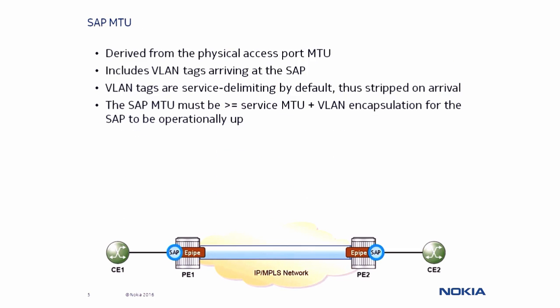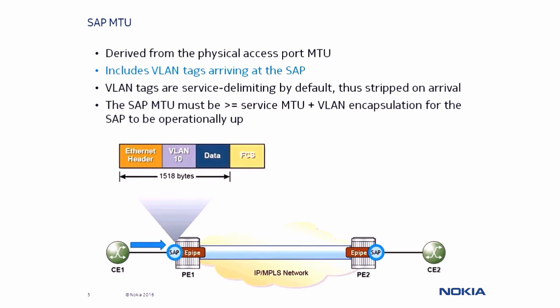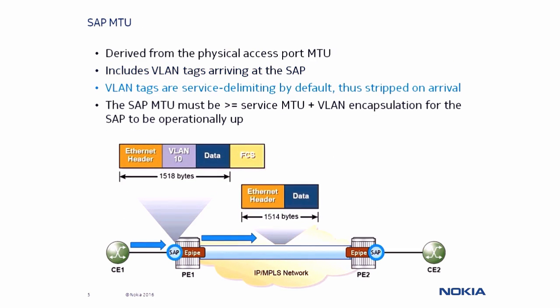The SAP MTU is actually derived from the Physical Access Port MTU and includes any VLAN tags arriving at the SAP. However, it is important to note that VLAN tags by default are service-delimiting, which means they are stripped at service ingress and therefore not maintained through the service. Because of this, we can conclude the SAP MTU must be greater than or equal to the service MTU plus the VLAN encapsulation.